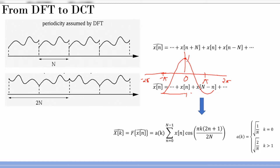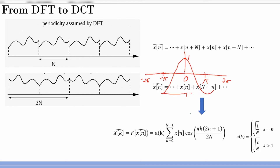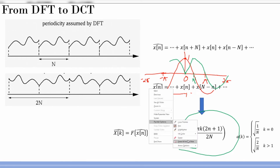Cosine is even-symmetric: cosine of zero is one, and the function is symmetric around zero. Sine, on the other hand, is odd — sine of zero is zero, goes to a maximum at π/2, and is anti-symmetric. The DFT has a combination of sine and cosine, which is why it assumes periodic replication. But if you do symmetric replication you end up with only cosine basis functions, and that is what is known as the discrete cosine transform.